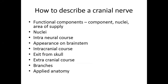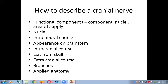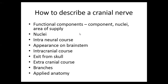Firstly, we talk about the functional component — the component, the nucleus which contributes to this component, fibers for this component, and the area of supply. Then we talk about the various nuclei of the cranial nerve, the intraneural course, where the nerve appears on the brainstem, the intracranial course, exit from the skull, the extracranial course, branches, and lastly the applied anatomy.